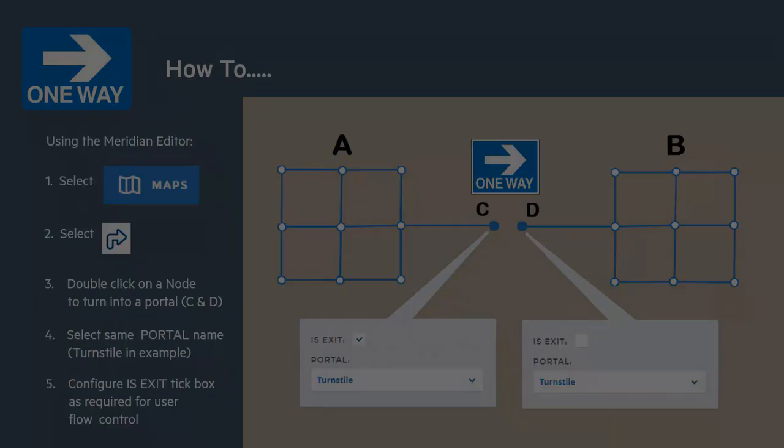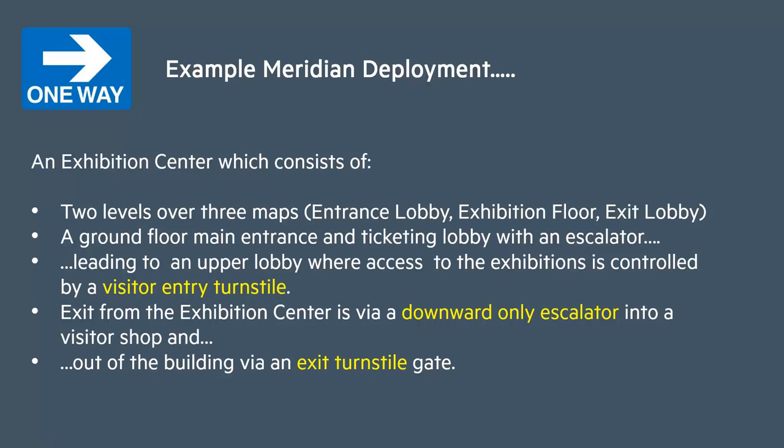Now let's take a look at an example Meridian deployment — in this case an exhibition centre, where we need to represent several unidirectional routes. There's a turnstile entry to the exhibition itself, a downward exit-only escalator, and a turnstile at the exit of the building. Let's switch to the Meridian Editor now and work through that configuration.